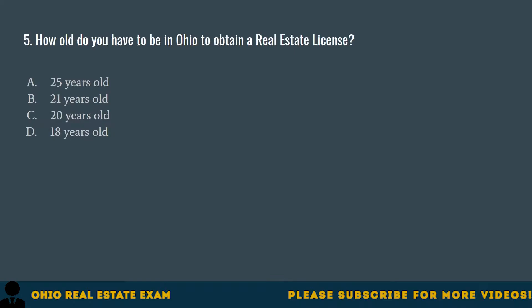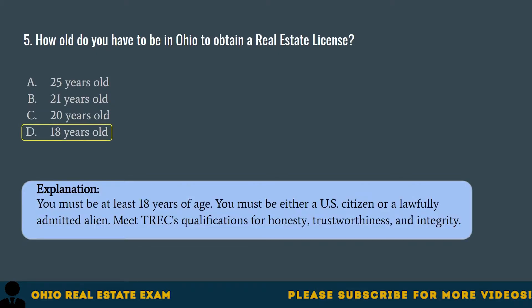Question 5. How old do you have to be in Ohio to obtain a real estate license? A. 25 years old. B. 21 years old. C. 20 years old. D. 18 years old. The correct answer is D. 18 years old. You must be at least 18 years of age. You must be either a US citizen or a lawfully admitted alien, and meet TREC's qualifications for honesty, trustworthiness, and integrity.